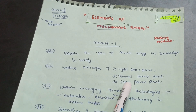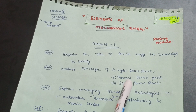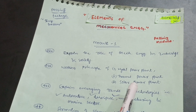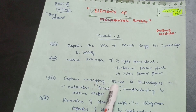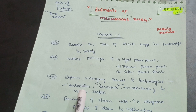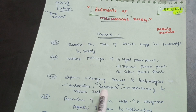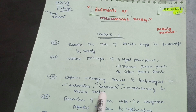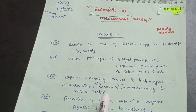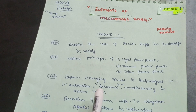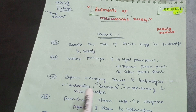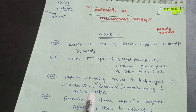You also need to explain emerging trends and technologies in various sectors — it may be the automotive sector, aerospace sector, manufacturing sector, or marine sector. Among these four, definitely two will be asked, sometimes automotive or aerospace, and simultaneously manufacturing and marine sectors.